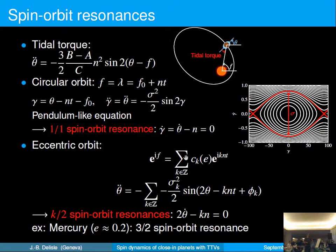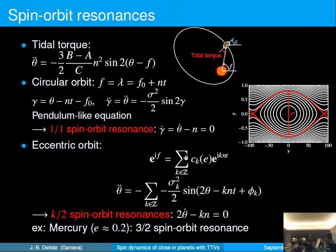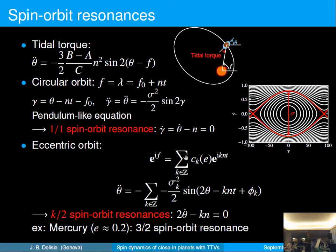If you have an eccentric orbit, then the true longitude can be expanded in a Fourier series of the mean longitude or time. Replacing this in the equation of the tidal torque, you obtain a more complex equation with many terms. You still have the term corresponding to the one-to-one resonance, but now you have other terms corresponding to k/2 spin-orbit resonances. Mercury, for example, is in the 3-to-2 spin-orbit resonance, which arises because Mercury's eccentricity is 0.2. But for close-in planets, tidal dissipation completely damps the eccentricities, so we don't expect k/2 spin-orbit resonances — only the one-to-one synchronous resonance. This is why people often assume those close-in planets to be synchronized.